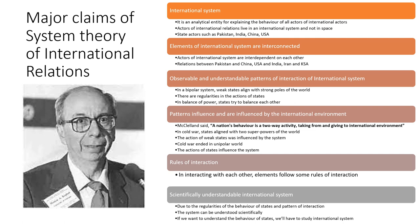Kaplan also claimed that the international system is scientifically understandable. Due to the regularities of state behavior and the patterns of interaction, the system can be understood scientifically. In a bipolar system, states would behave one way; in a unipolar system, they would behave in another way. These were the main claims of the system theory of international relations given by Morton Kaplan.